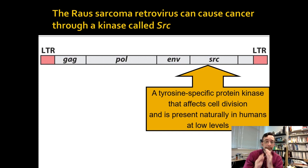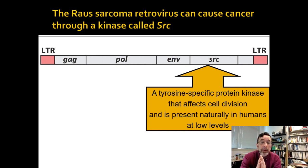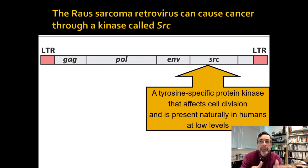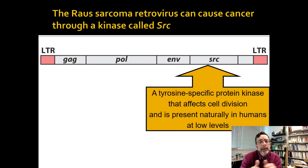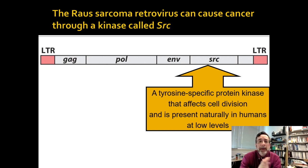SRC is tyrosine-specific — it's a kinase that affects cell division and is present naturally in low levels in humans. The problem is not that it's there, but that it's in the wrong place. It's a normal kinase, but it enters pretty much randomly into the genome. The virus integrates it into the genome at weird places and then it gets turned on, it can affect cell signaling, turn growth on, and then you have cancer. This is how a virus can cause cancer.